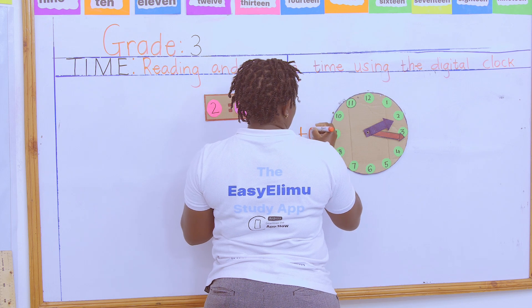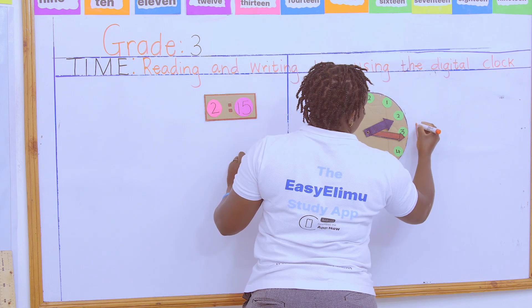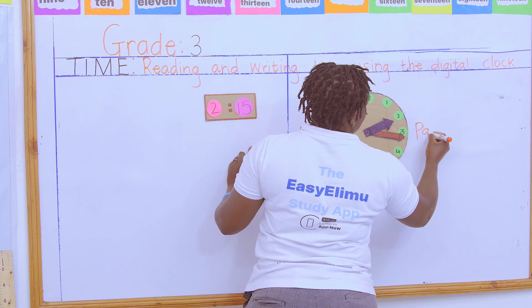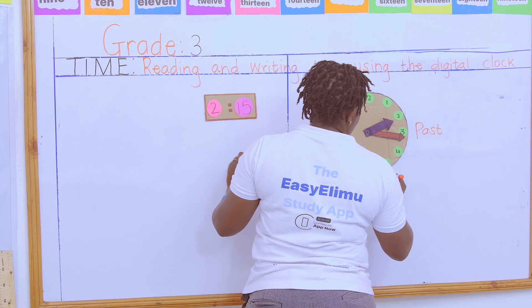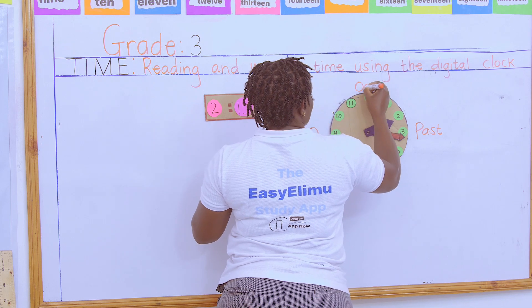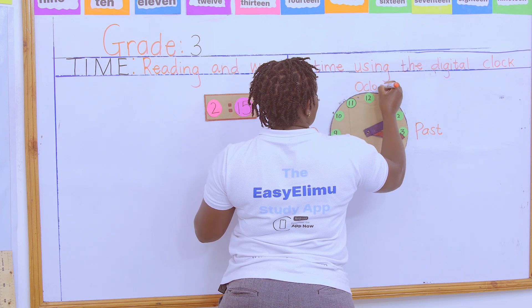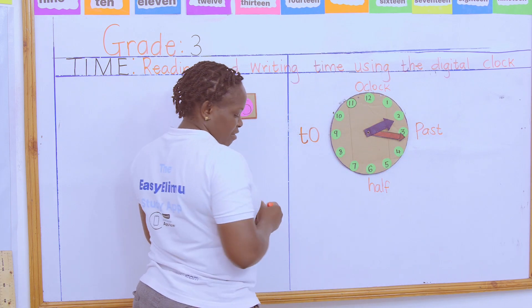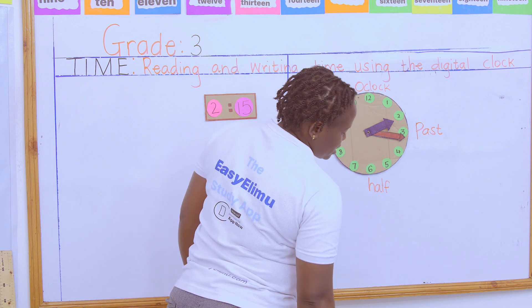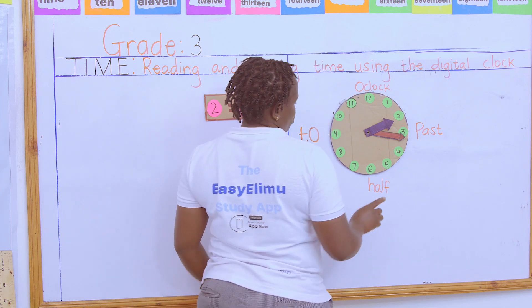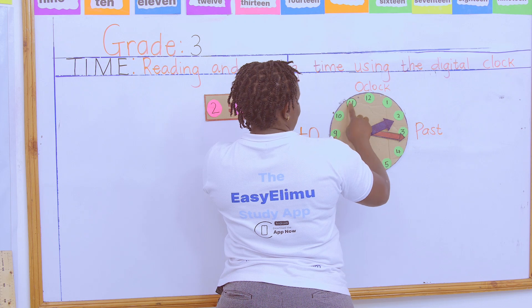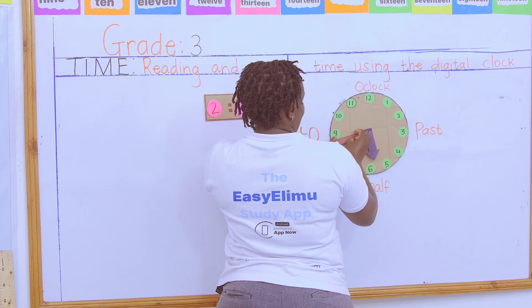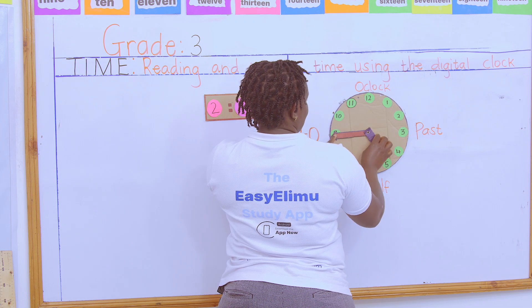This is past. This is half. This is o'clock. So I've been told to represent quarter to three — remaining five, ten, fifteen minutes. So my hour hand will be on nine.